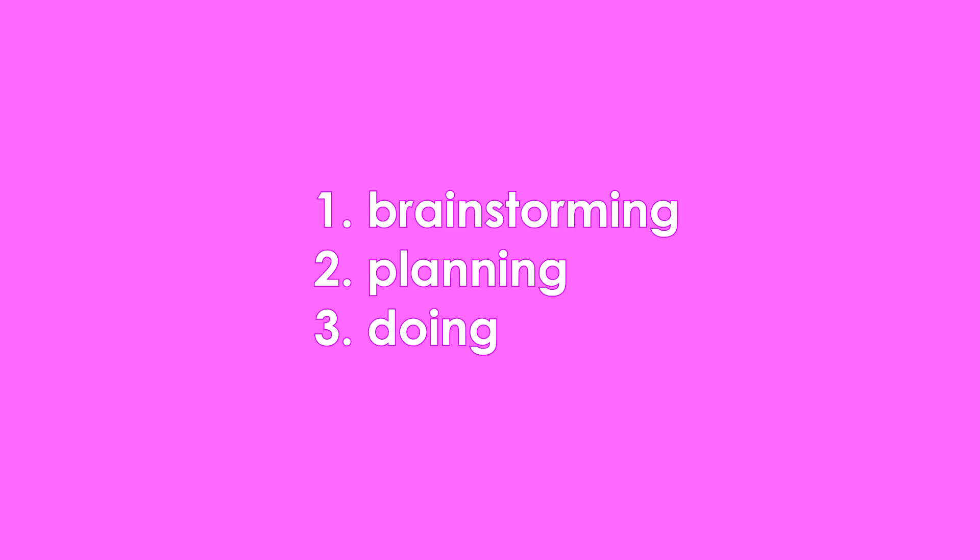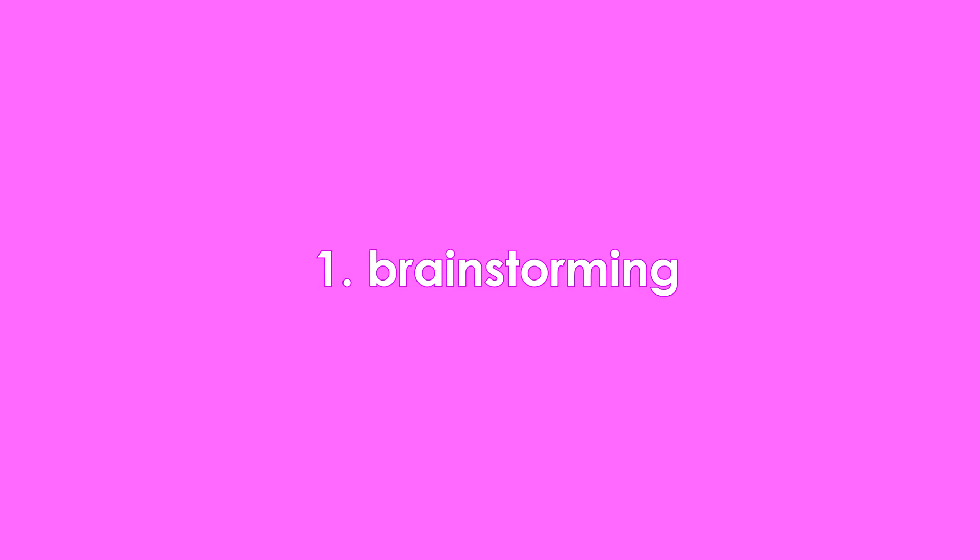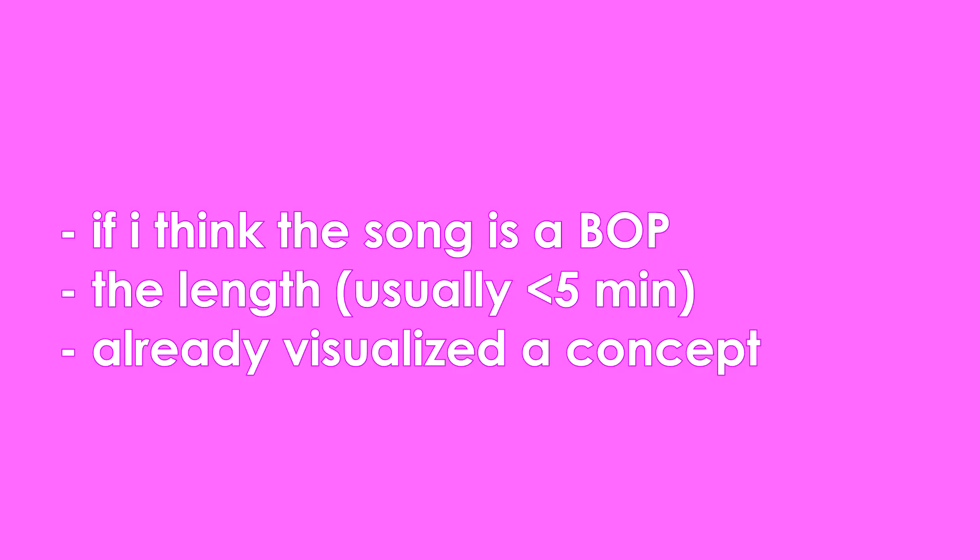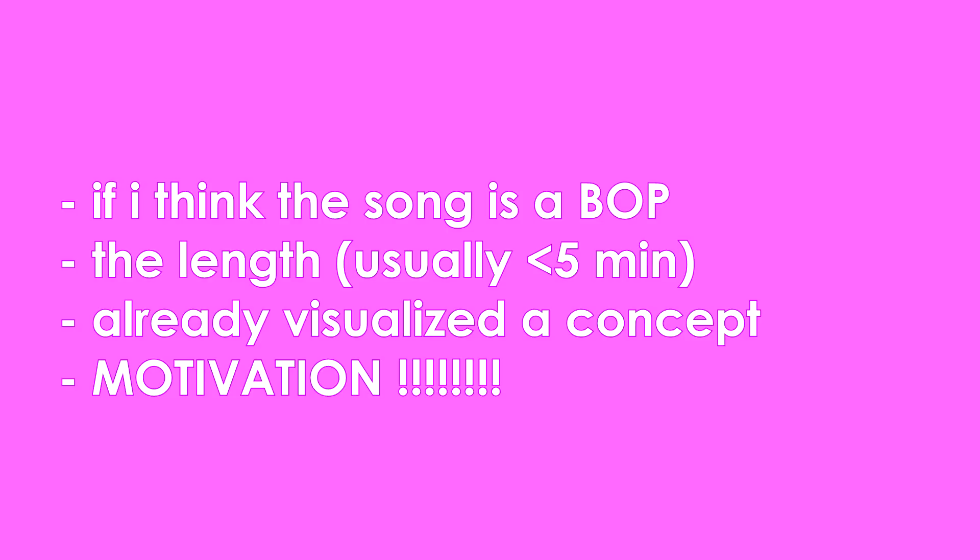Essentially, if I'm listening to a musical that I really like and I know I want to make an animatic, but I don't know what song to choose, I consider the following things: if I think the song is a bop, the length, if I already have automatic ideas for how I want to visualize it, and the amount of motivation I have to make it. These things usually drive my will to make an animatic.